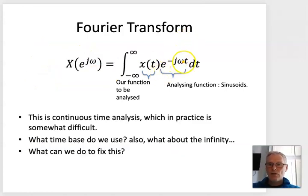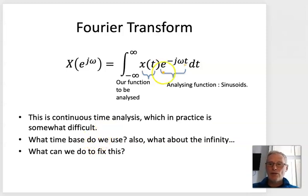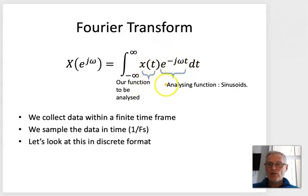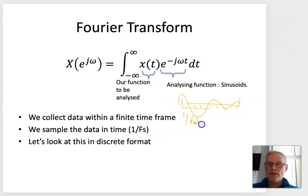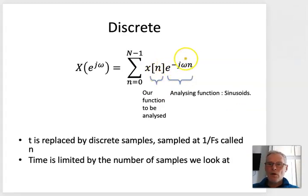This is still continuous time — we have t here, integrating from minus infinity to plus infinity, which is difficult in the digital world. To address this, we collect data within a finite time series: we collect a number of samples within a particular period, stipulating that sample points are taken at intervals of 1/fₛ. We replace t with discrete samples at 1/fₛ, calling that the n value.